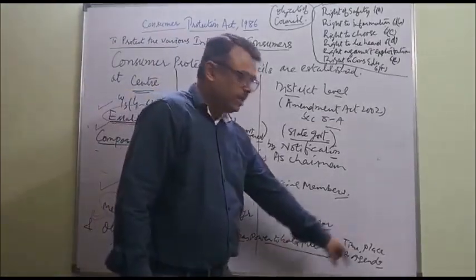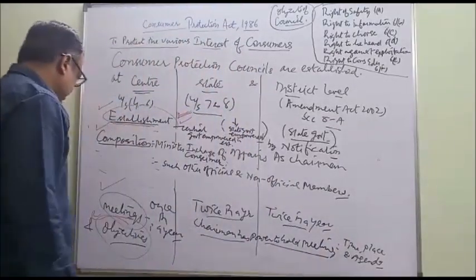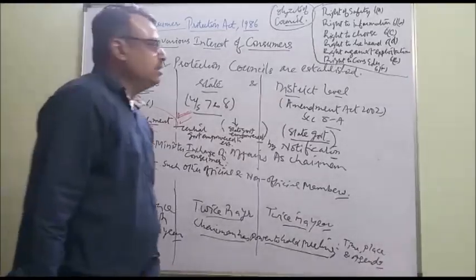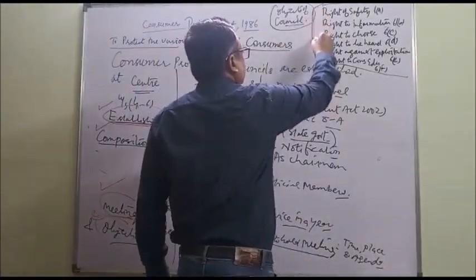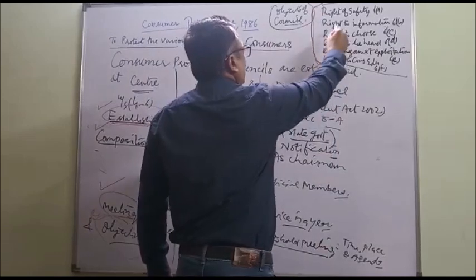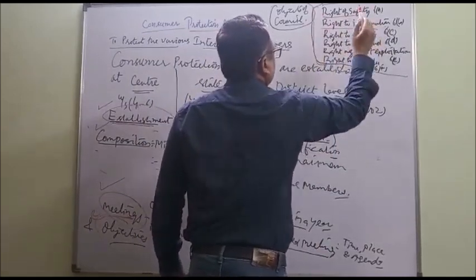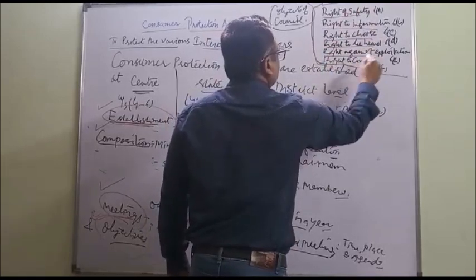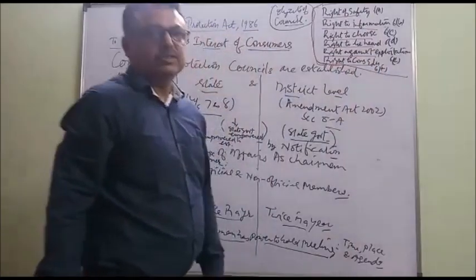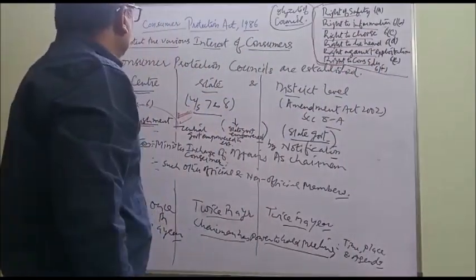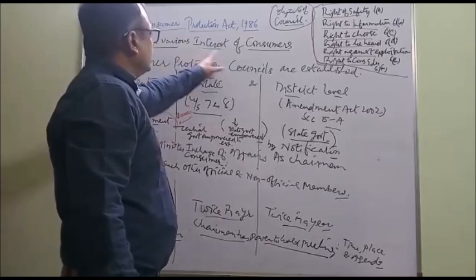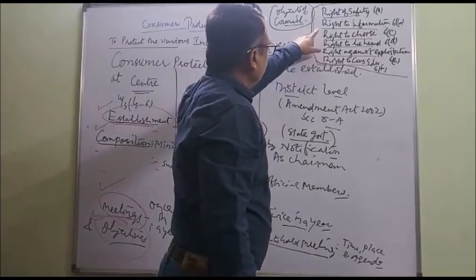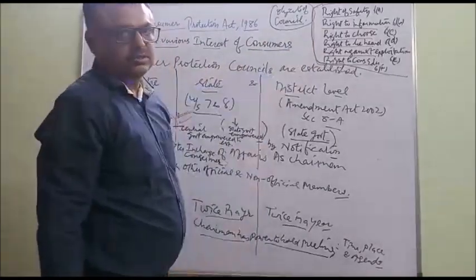The Chairman decides the time, place and agenda of the meetings. As already mentioned, all the objectives of the Councils are: right to safety, right to information, right to choose, right to be heard, right against exploitation, and right of consumer education. These are all the interests of the consumers, as achieved by the Consumer Protection Councils.